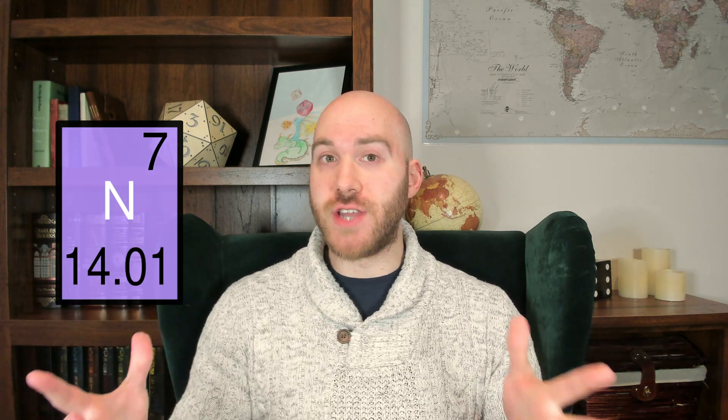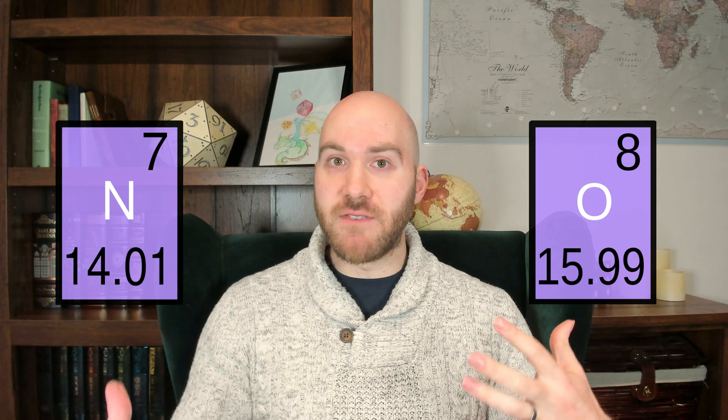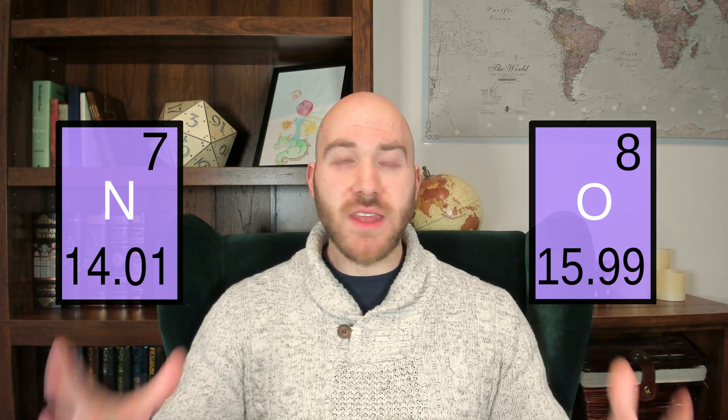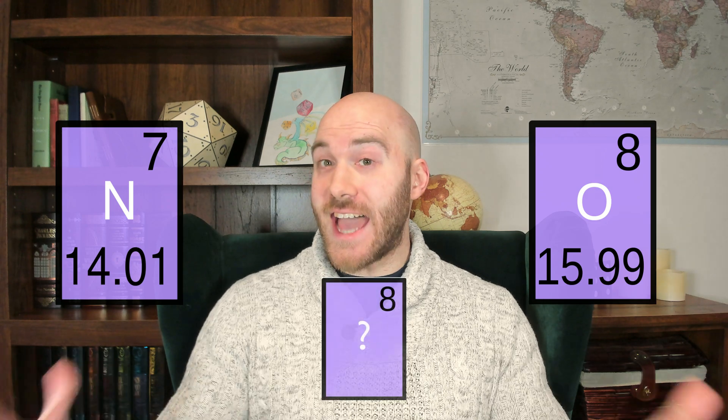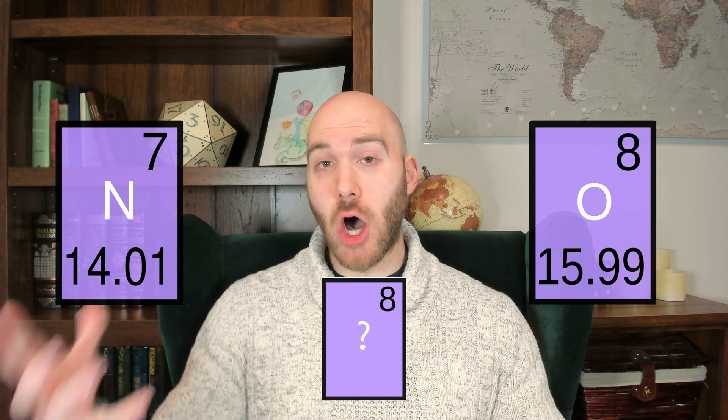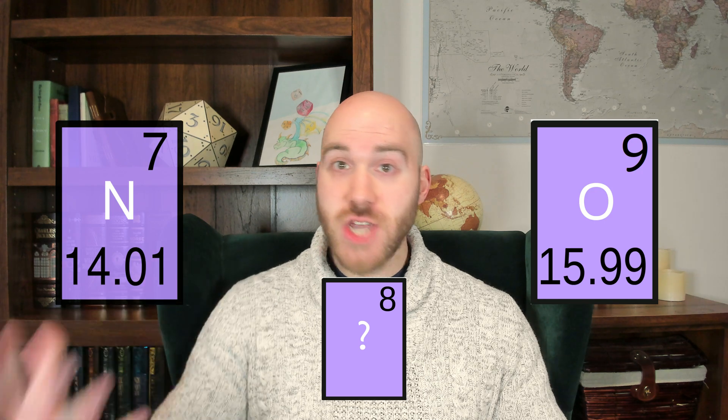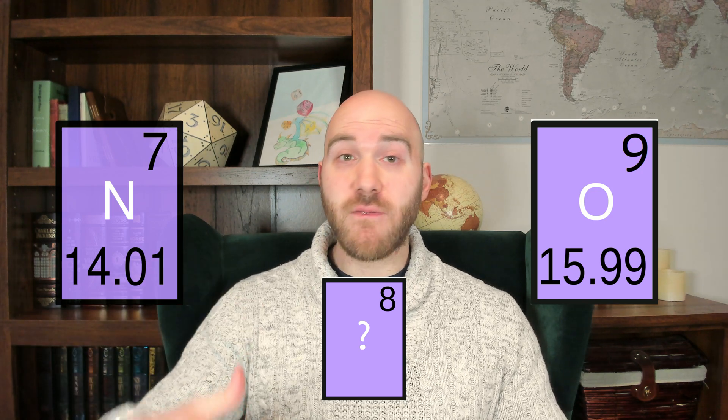The number of protons an element has determines its position within the periodic table. By inserting an element between, say, nitrogen and oxygen — numbers 7 and 8 on the periodic table respectively — that would give that new element 8 protons and would make oxygen have 9, bumping it up to number 9 on the table, and everything above that up 1 as well.